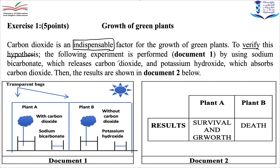In experiment A, sodium bicarbonate is present. As you can see here, the plant is covered by a transparent bag, which allows sunlight to pass through and reach the green plant. The sodium bicarbonate is important because it gives off carbon dioxide — the air inside is enriched in carbon dioxide. This means plant A is placed in a medium rich in carbon dioxide.